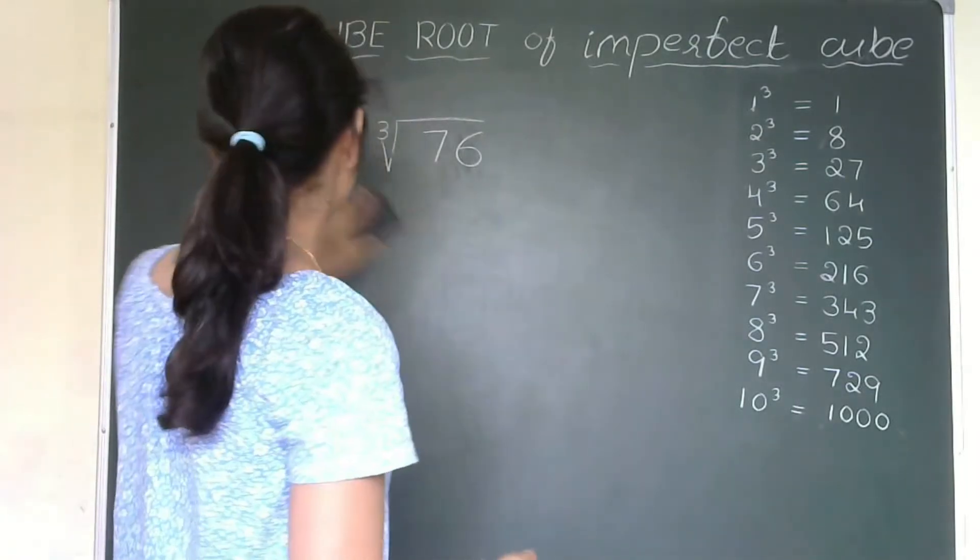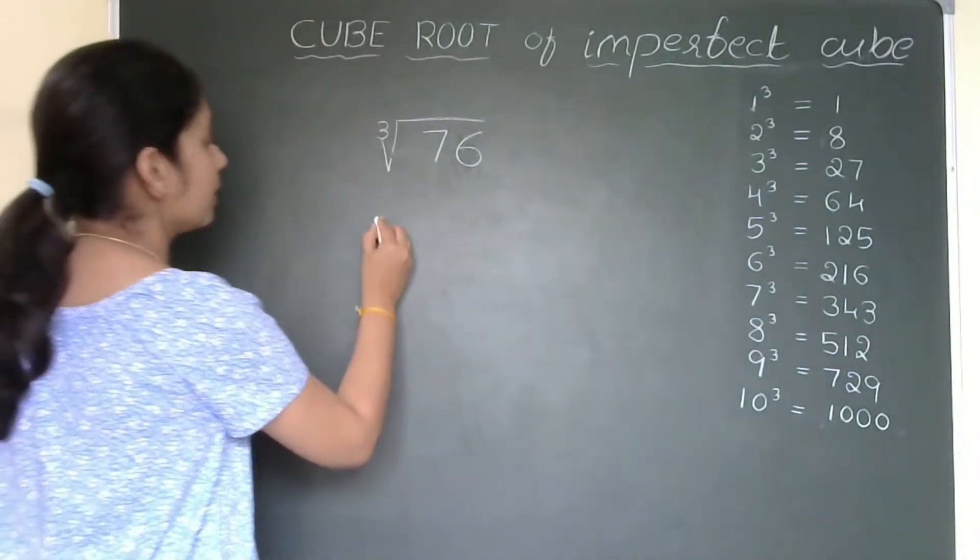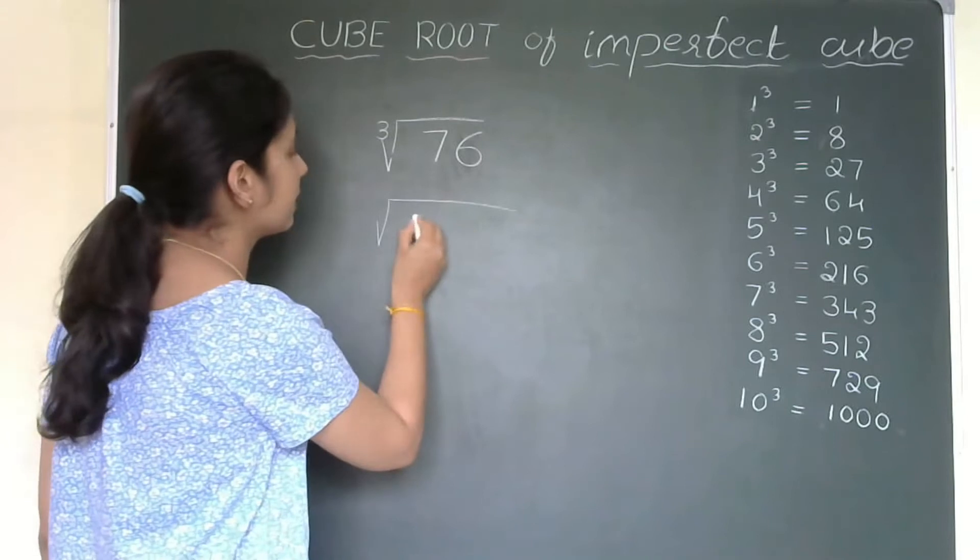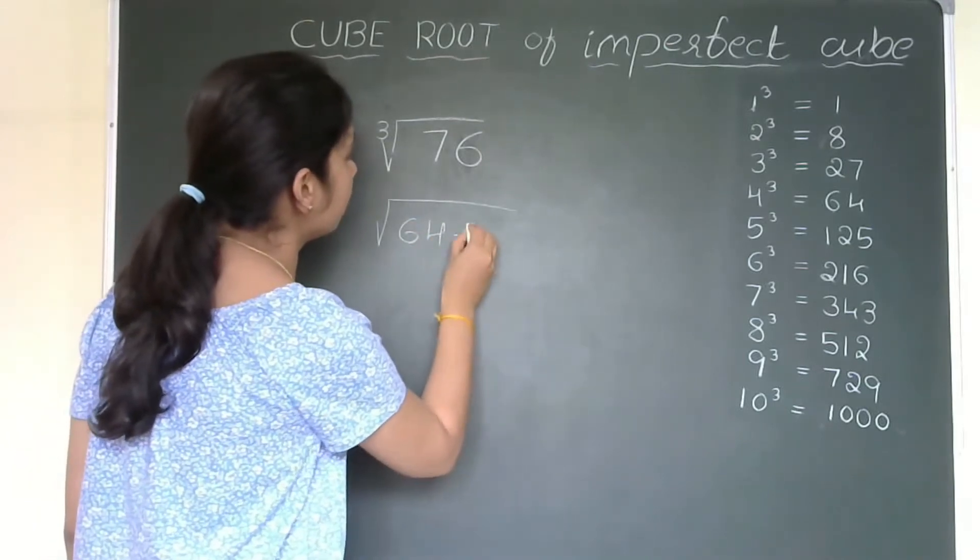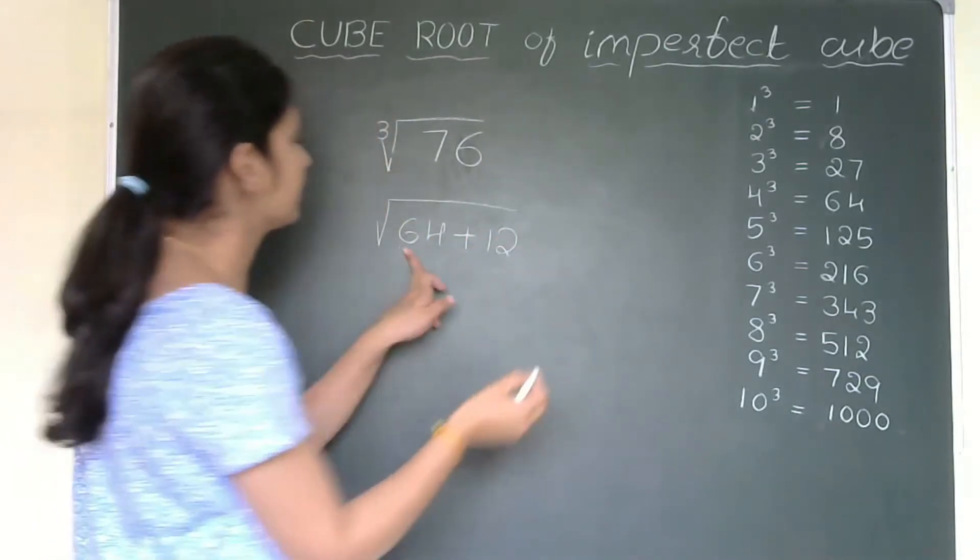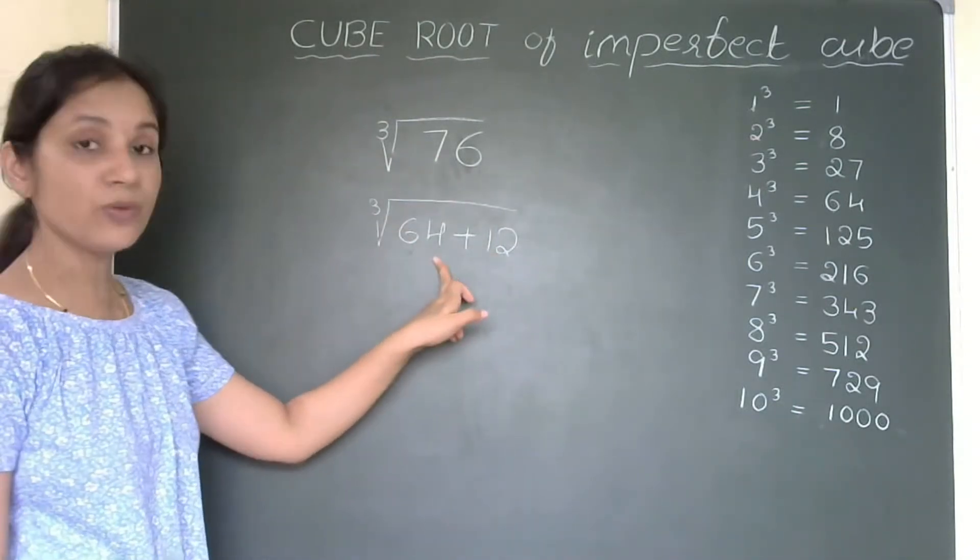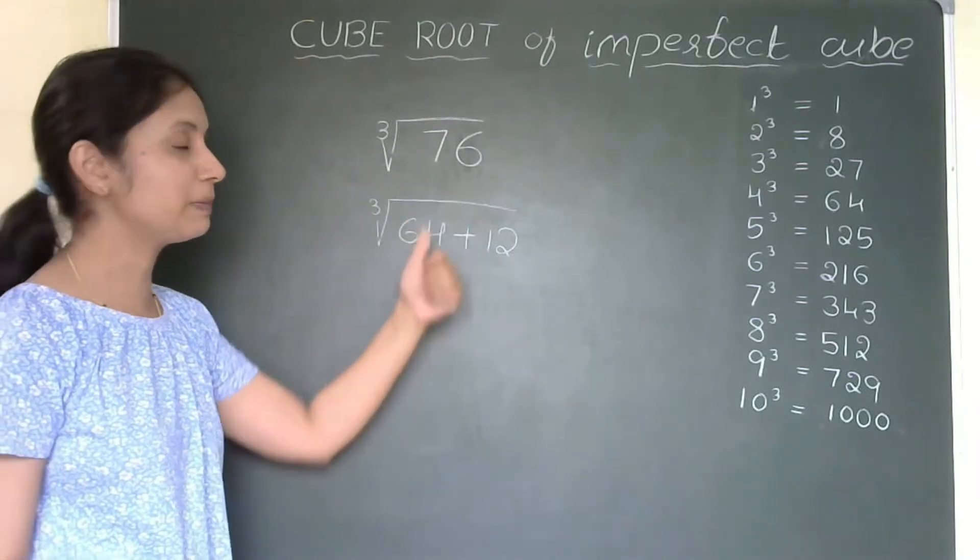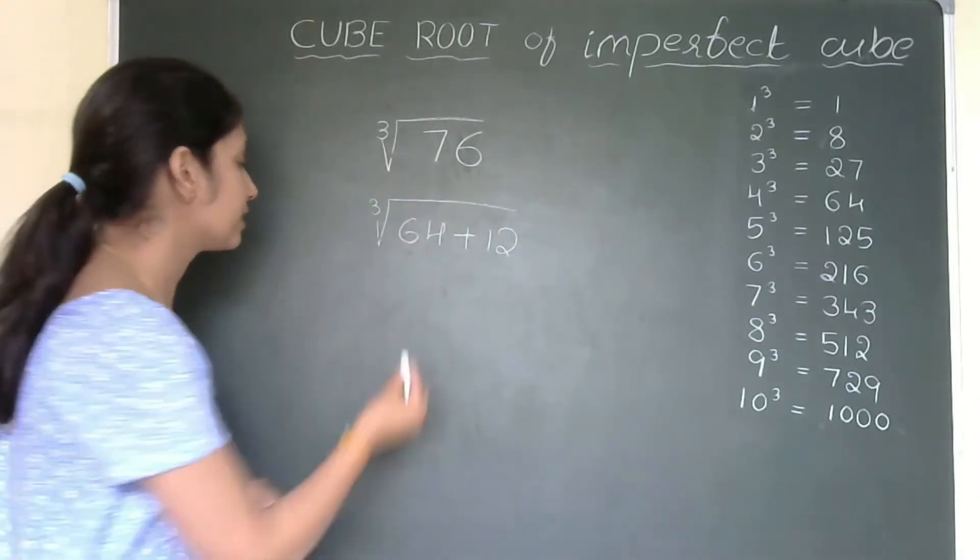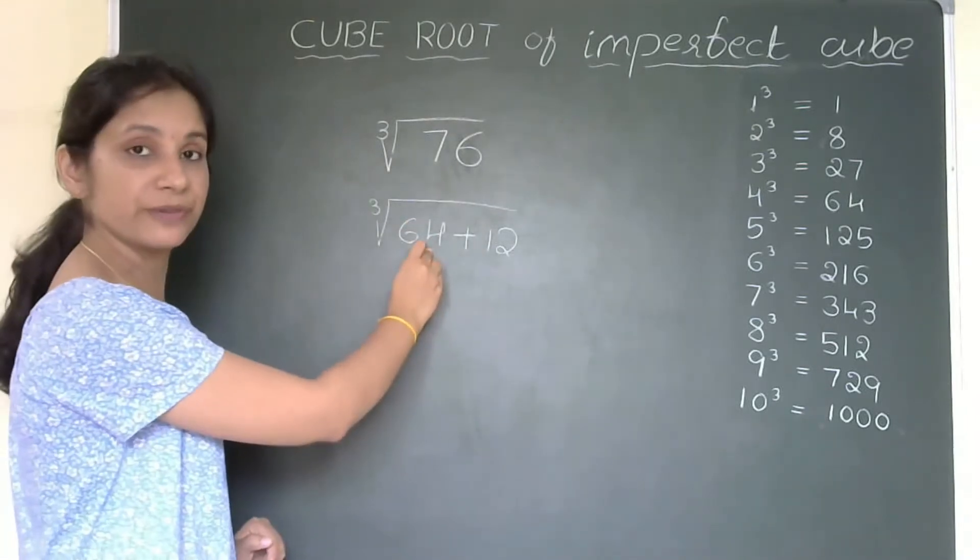If I consider 64, how can I split the number? 76 can be written as 64 plus 12. Yes, 64 plus 12 is 76 only. We are finding cube root here. Now, the next step, first step is splitting the number and the next step is cube root of 64 is 4.